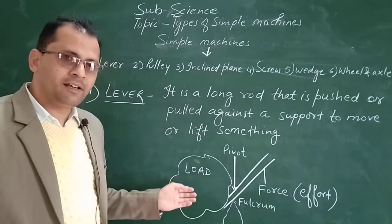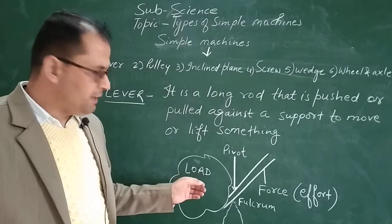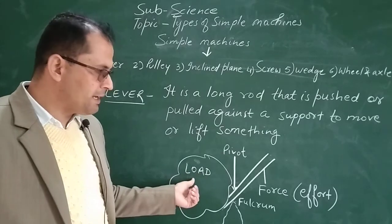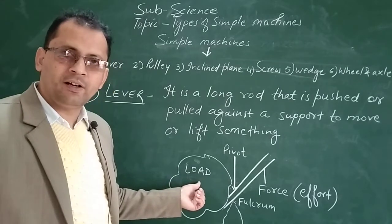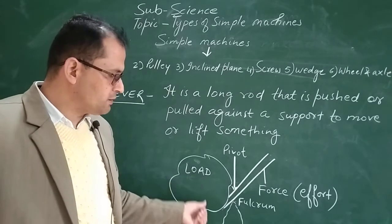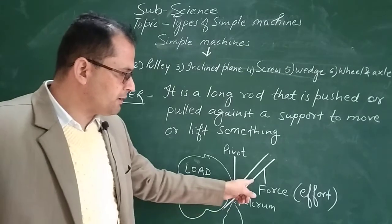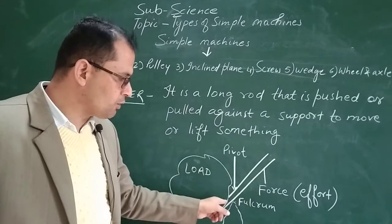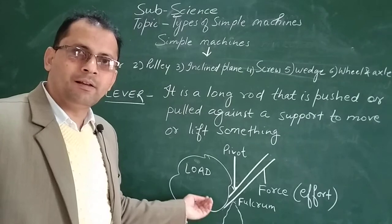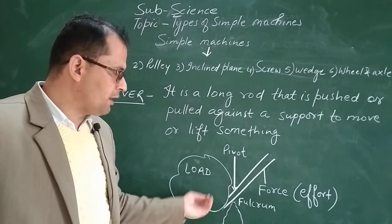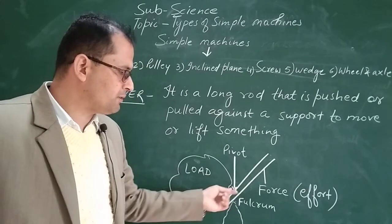So you can see here I have made a diagram. This is a huge rock and we have to move it. It is known as load. So this load is to be lifted or moved from its original position. Now what we have done? We have kept a long rod, this long rod, just beneath this rock or the larger stone. Now this is the pivot, that is fulcrum. This is the support on which we have kept the long rod.